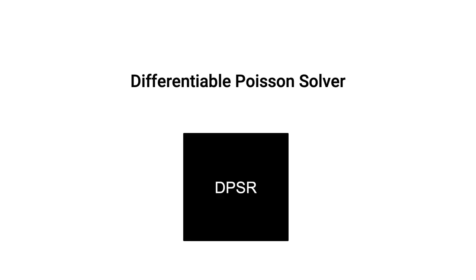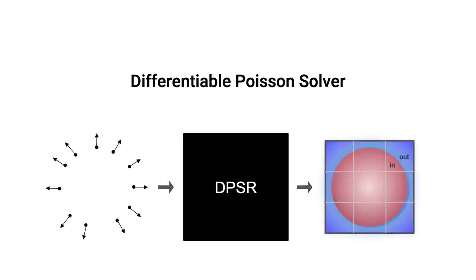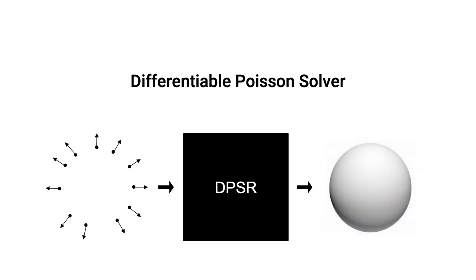The core of our SAP representation is a versatile and differentiable Poisson solver — we call it DPSR. Given some oriented point clouds, our Poisson solver can output a dense regular grid indicating whether a point is inside the underlying shape or not. We can then easily run marching cubes on the indicator grid to obtain a mesh.